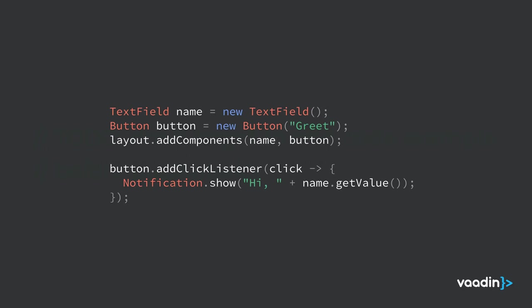If you're unfamiliar with Vaadin and just watched me code that, you're probably wondering what just happened — you're writing Java, there's HTML happening in the browser, what kind of magic is going on? To illustrate that, let's look at a simple example. We have a text field and a button added to a layout. For the button, we add a click listener that gets the value from the name text field and shows that in a notification.